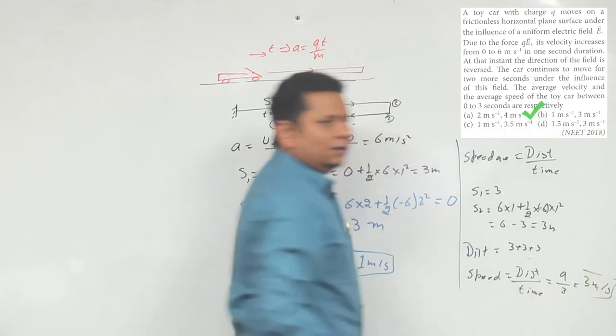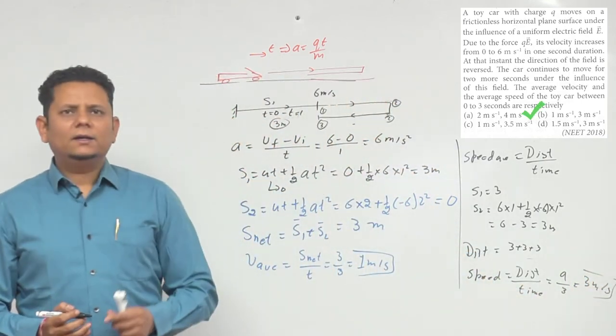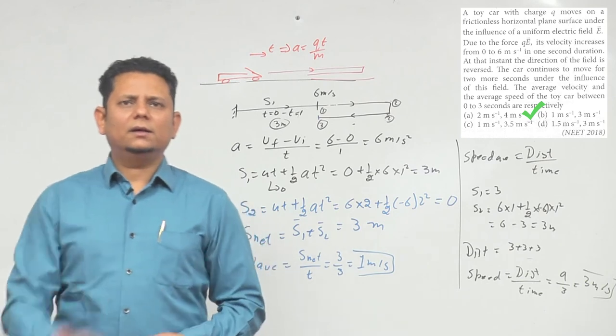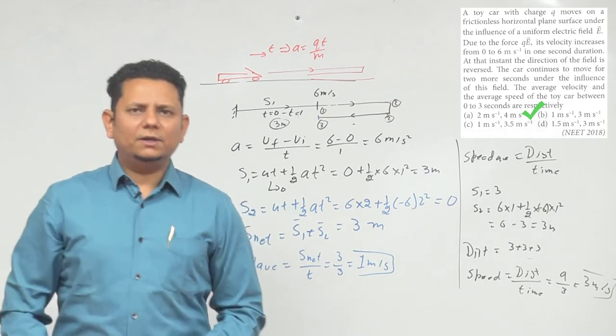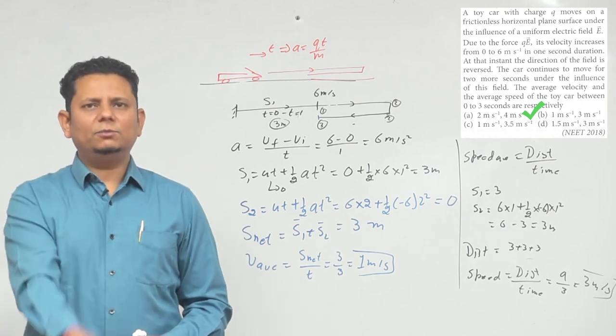Based on this, we can say 2 meters per second average speed and 1 meter per second average velocity. Option number C would be the right answer.